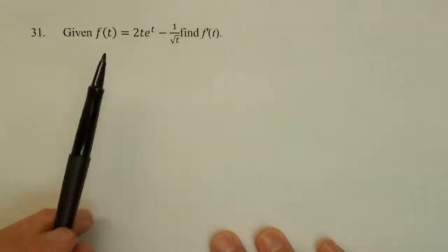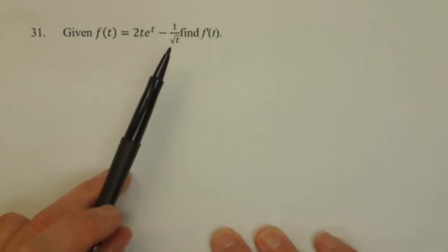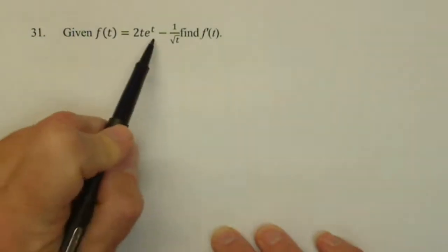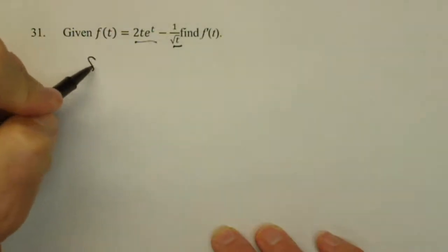So we're asked to find f prime of t when f of t is 2t e to the t minus 1 over rad t. And we've got a product rule here, and we're going to have a power function, so we may want to rewrite this thing first.